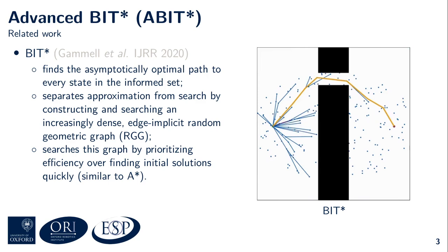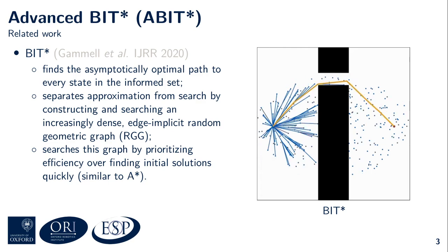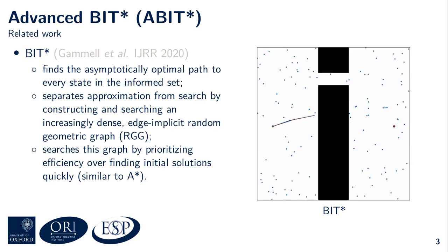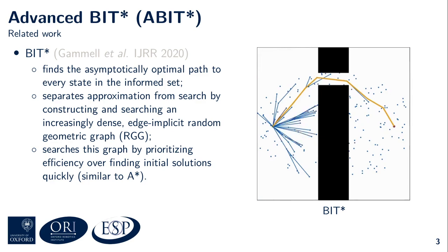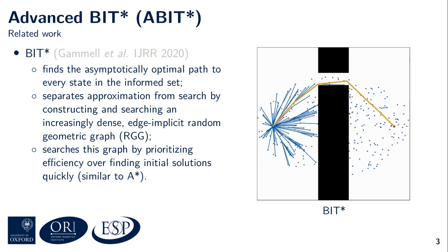BIT* represents a different planning paradigm for single-query planners. It aims to unify informed graph search algorithms, such as A*, with sampling-based algorithms, such as RRT*. BIT* only searches for asymptotically optimal paths to states in the informed set, which is the set of states that can possibly improve the current solution. It separates approximation from search by constructing and searching an increasingly dense edge-implicit random geometric graph, or RGG for short. BIT* searches this graph by prioritizing efficiency, similar to A*. One consequence is that it does not find an initial solution until it finds the resolution-optimal solution on the first random geometric graph that contains the solution. Another consequence is that BIT* always fully exploits its approximation using a single search on every level of approximation to find the resolution-optimal solution on each level.